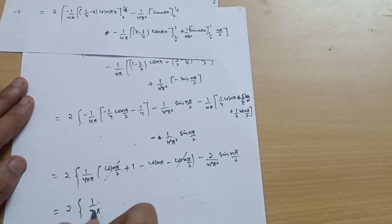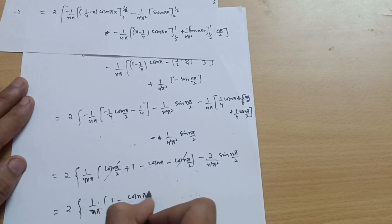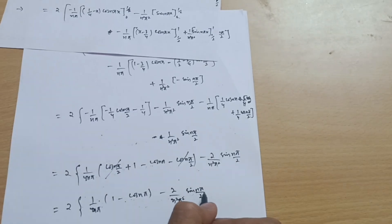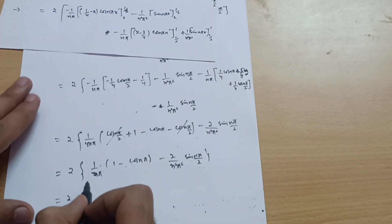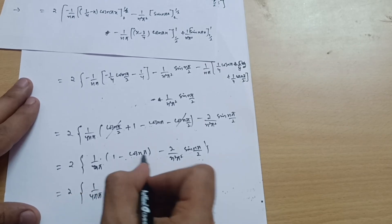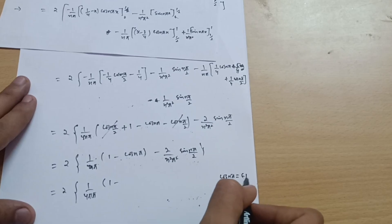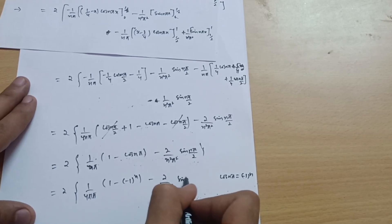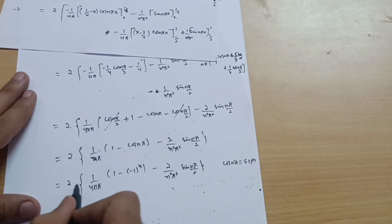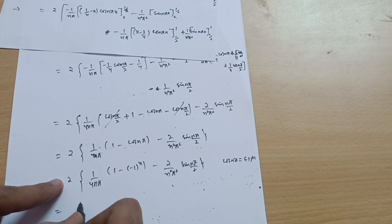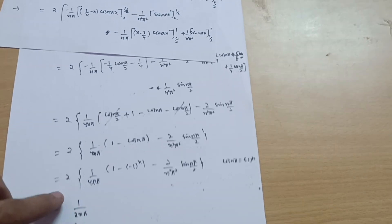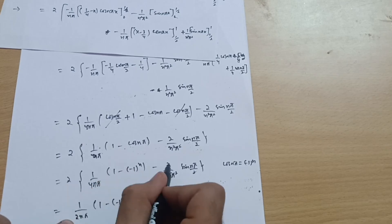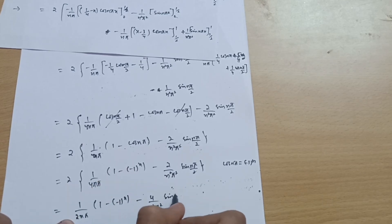Since 1 − cos(nπ) = 1 − (−1)ⁿ, we substitute: bn = 2 × [(1/4nπ)·(1 − (−1)ⁿ) − (2/n²π²)·sin(nπ/2)]. Multiplying through by 2: bn = (1/2nπ)·(1 − (−1)ⁿ) − (4/n²π²)·sin(nπ/2).